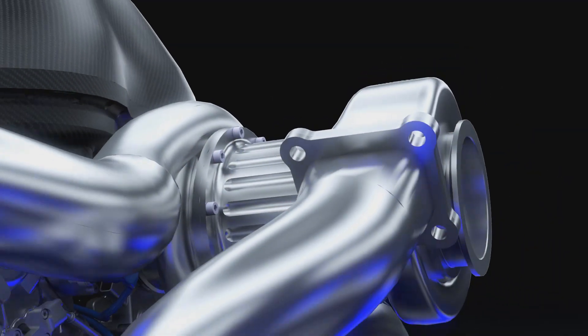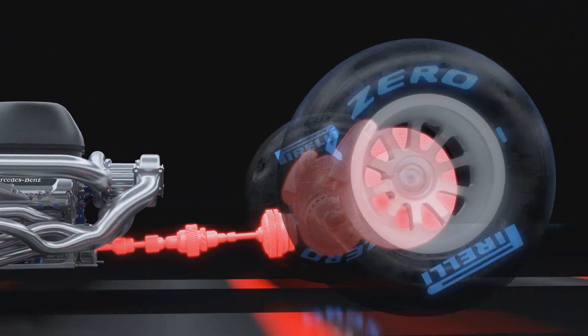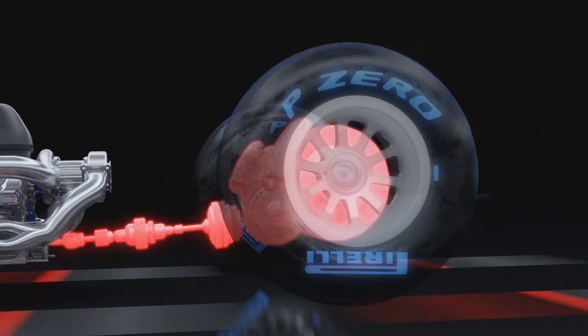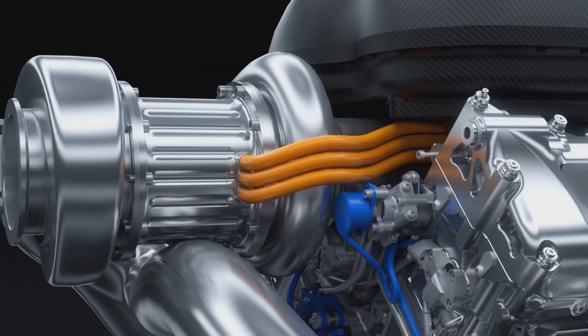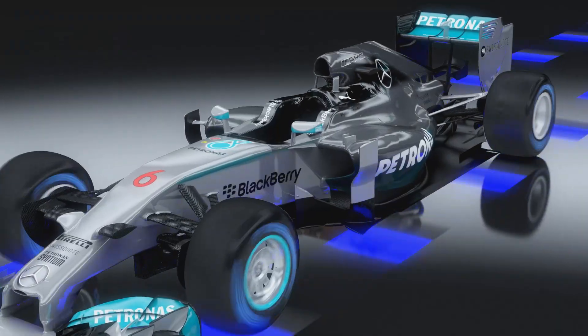The electric motors on their own develop more power than a family saloon car. It's the most advanced hybrid system yet seen in a race car. This new technology is used to achieve maximum efficiency because Formula One is now a fuel-based racing formula.